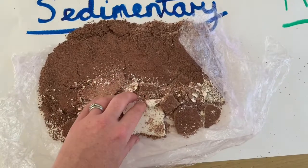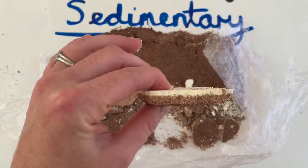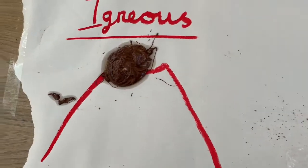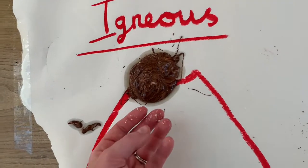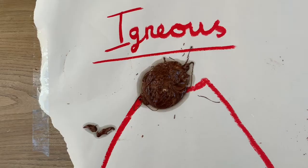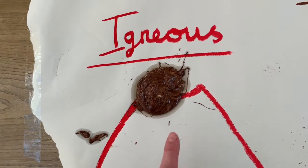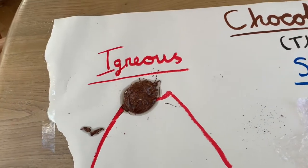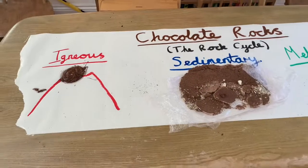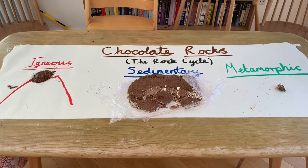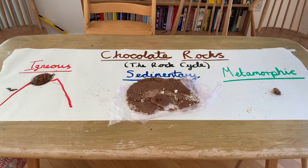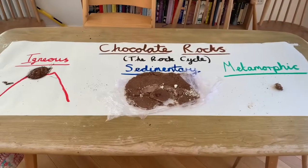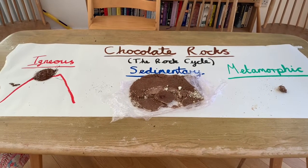We have got our sedimentary rock that shows the horizontal layers of sediment. And we have got our igneous rock that has erupted, possibly out of a volcano, come out of the earth as lava and has hardened and cooled into a rock. That is the rock cycle through the use of chocolate. I wonder if you fancy having a go — I'm pretty messy, but it was really good fun. I'm going to eat some now.